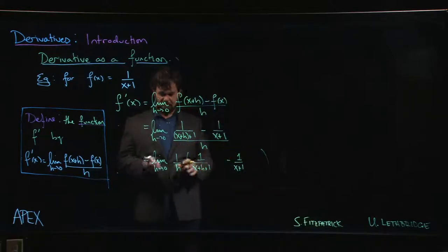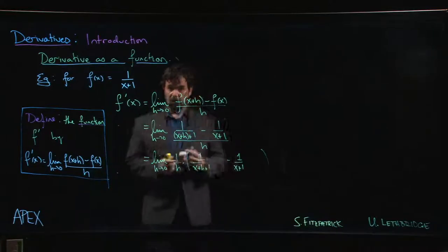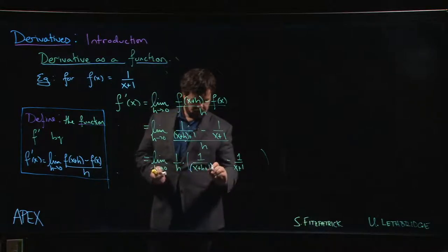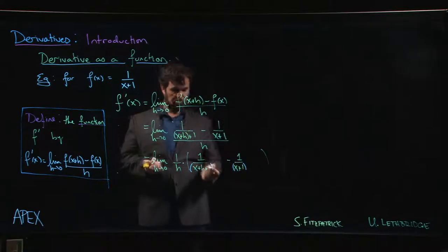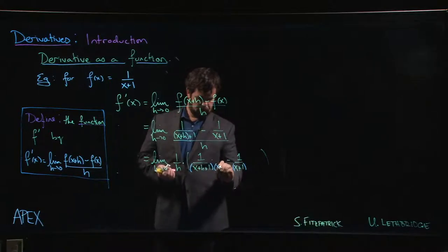We've got a difference of two fractions. Like anytime when you're dealing with a difference of two fractions, if you want to add or subtract fractions, you need a common denominator. Since we're dealing with variables, that denominator is always just going to be the product of the two denominators.